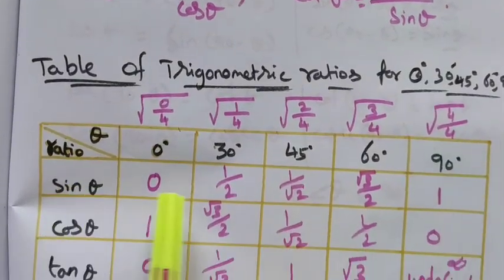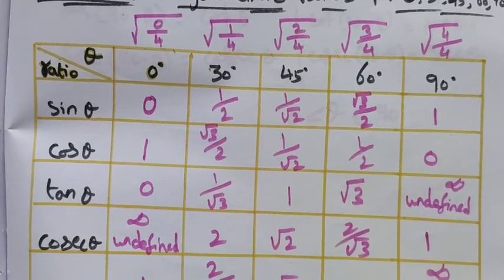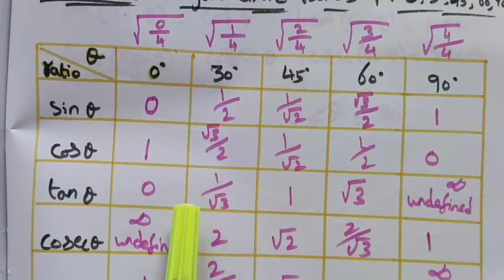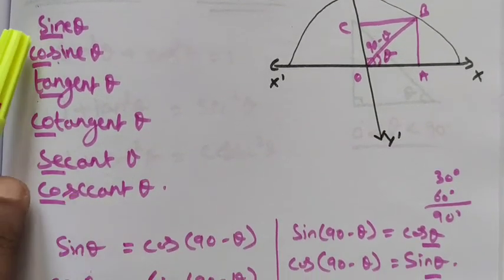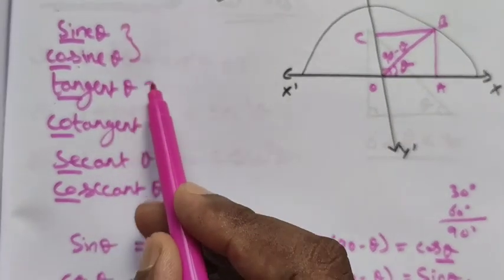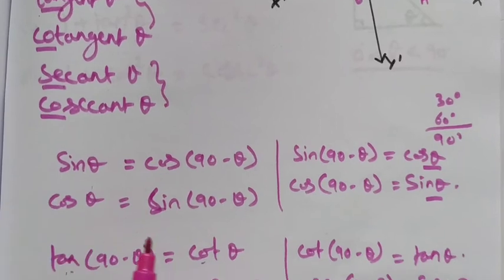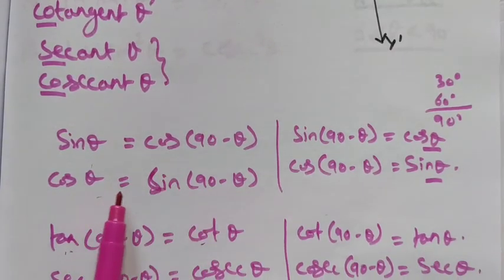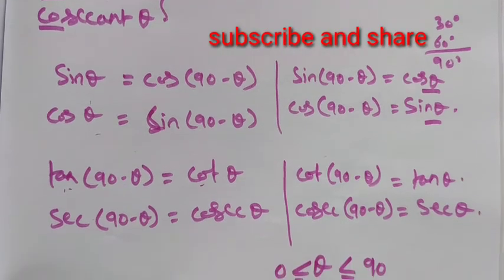We have already seen how to write the tables using this — only one sin theta value is enough to find out the remaining ones. Next are the complementary angles, which are co-pairs of the ratios. Sin always replaces cos, cos always replaces sin, tan replaces cot, and secant replaces cosecant — valid for angles less than 90 degrees.